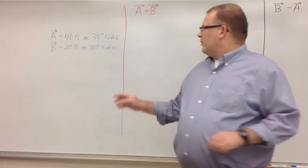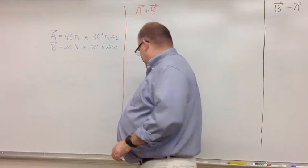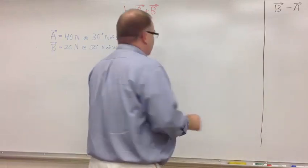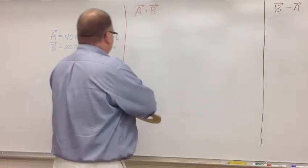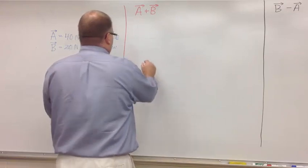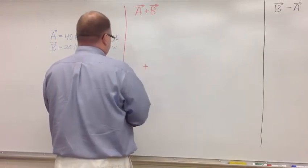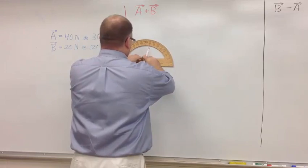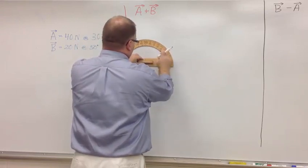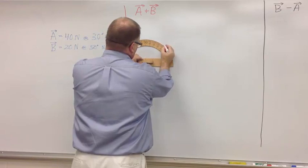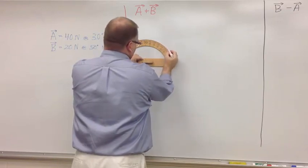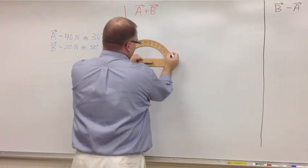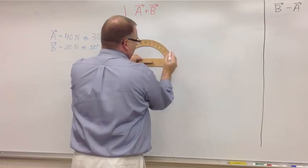So first thing we're going to do is draw vector A. From the starting point, from the origin of my graph, I'm going to make a little origin. I'm going to make a mark of 50 degrees. Put the center point in my origin. 30 degrees. 30 degrees for vector A. There's my mark.